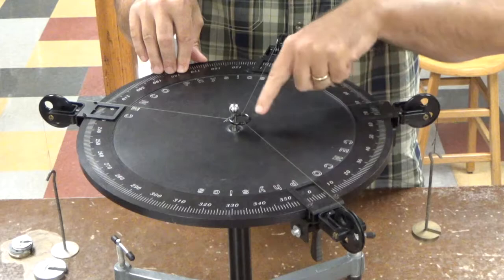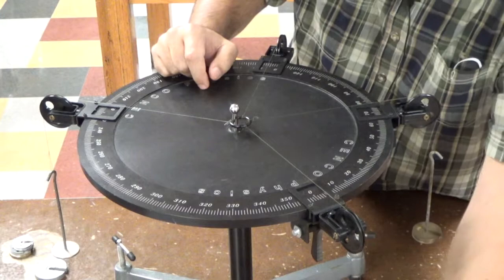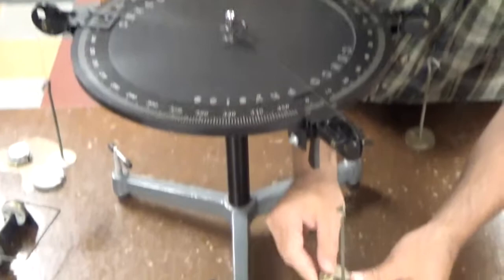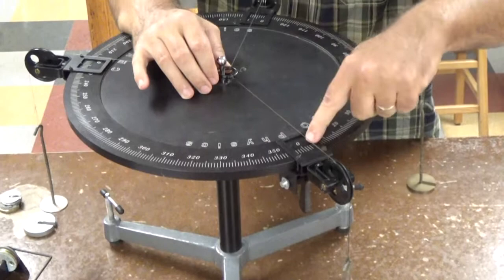At zero degrees, we have a piece of string that's tied to this little black ring right here, goes over this pulley, and then I have this hanger. On the hanger, we have 200 grams. The hanger itself is 50 grams, and then I have another 150. So there's our 200 grams pulling on this black ring up here at zero degrees of direction.